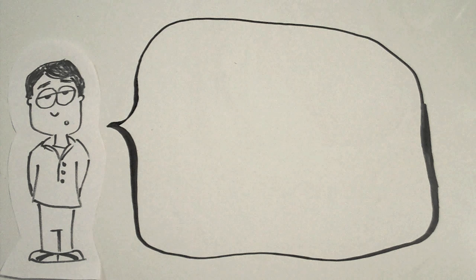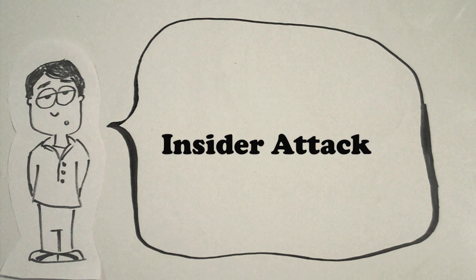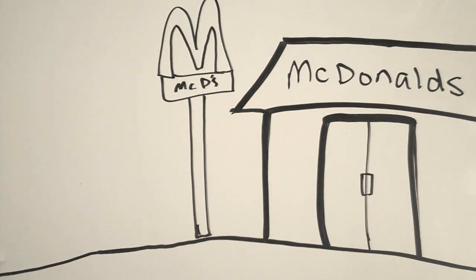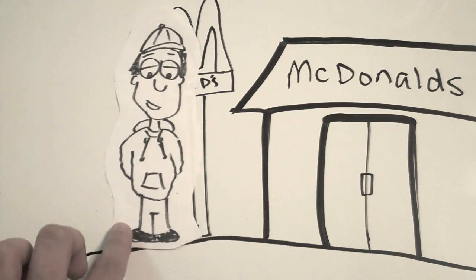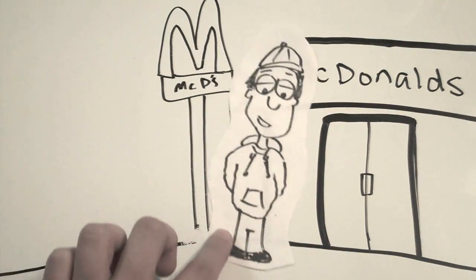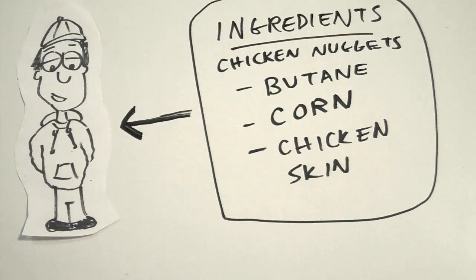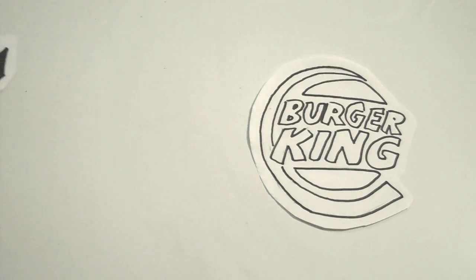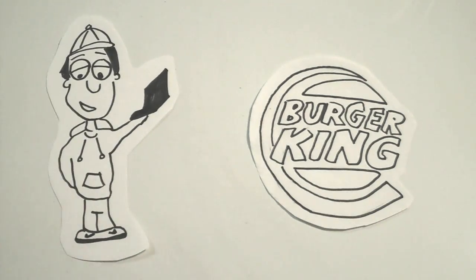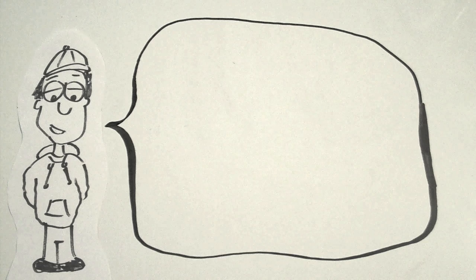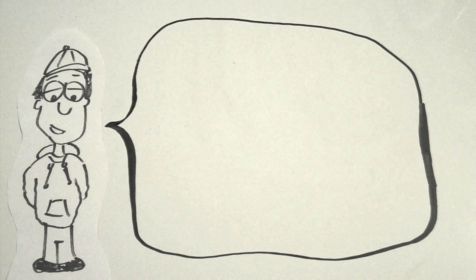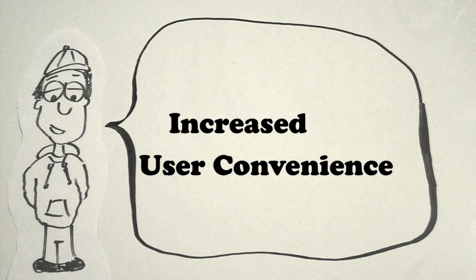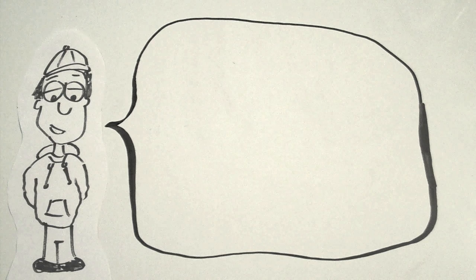Another security issue of mobile IP is the possibility of an insider attack. This usually involves a disgruntled employee gaining access to sensitive data and forwarding it to a competitor. Mobile IP is very important in our world today. The increased user convenience and the reduced need for application awareness of mobility is a major driving force for its adoption. Although there are limitations to mobile IP, it is apparent that there will be a higher need for mobile IP in the future.